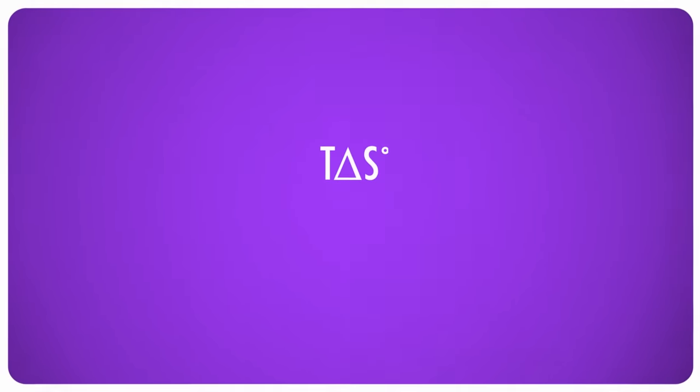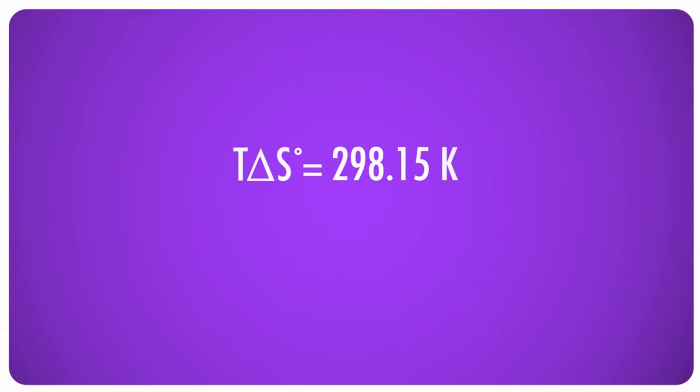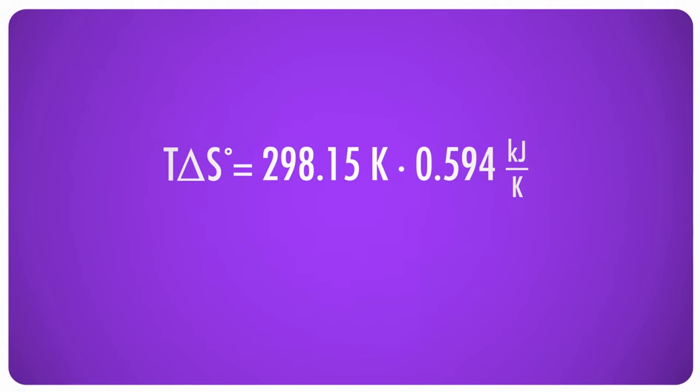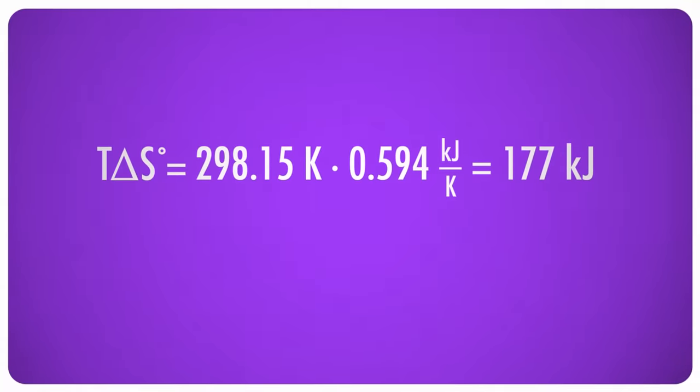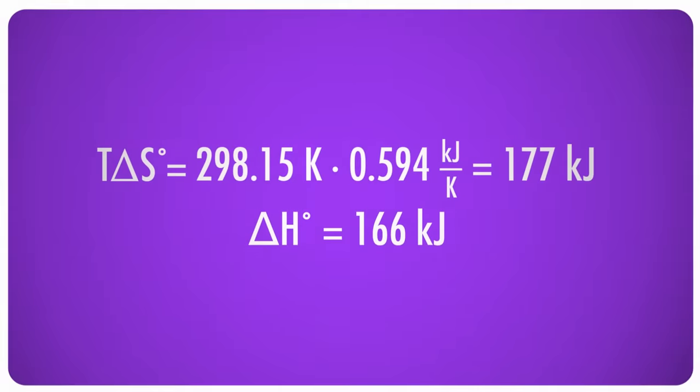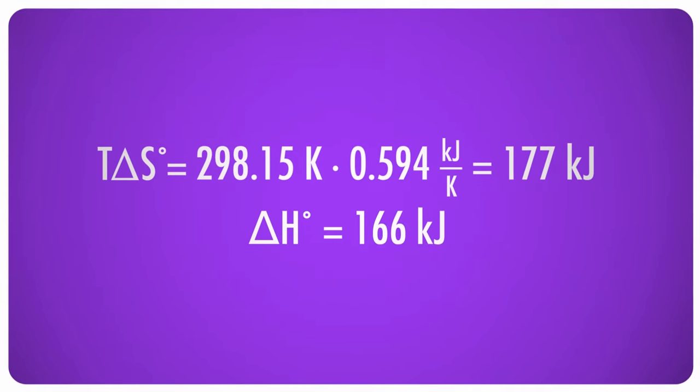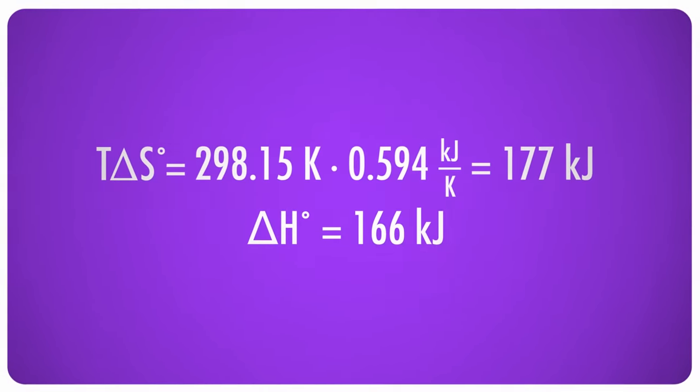Well, I'm gonna say that the temperature in here is about 25 degrees Celsius, or 298.15 Kelvin, because I'm awesome like that, I can just tell. When we multiply that by the change in entropy that we calculated, 0.594 kilojoules per kelvin, we get a value of 177 kilojoules. If we compare that to the change in enthalpy we calculated, 166 kilojoules, it is clear that the T delta S is higher than the delta H.